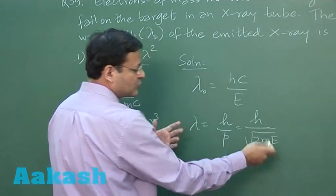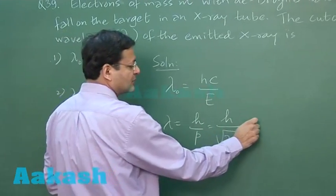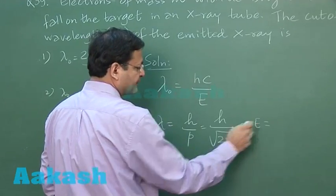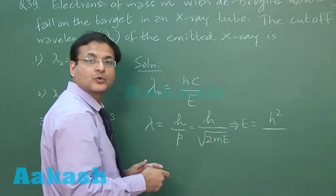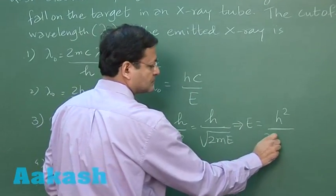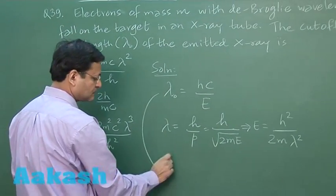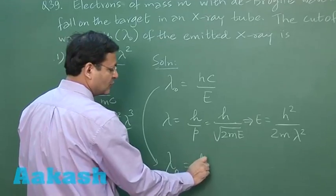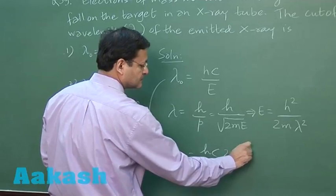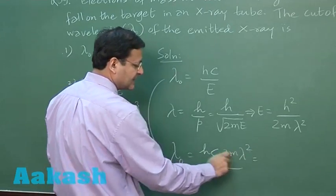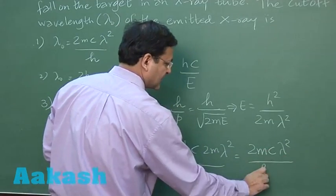So all you have to do is to take out the expression of e from this place and substitute here. Let us suppose you take out the value of e from this place, what do you get? You get simply h square upon 2 m lambda square and substitute it here. So what do you get, you get lambda naught is equal to hc upon h square and 2 m lambda square.